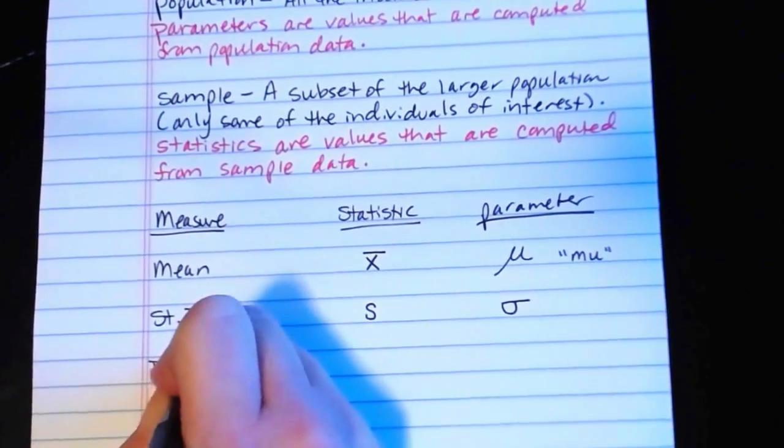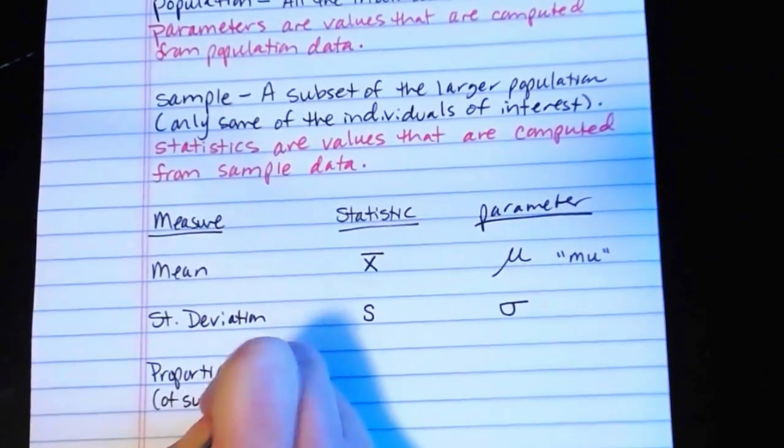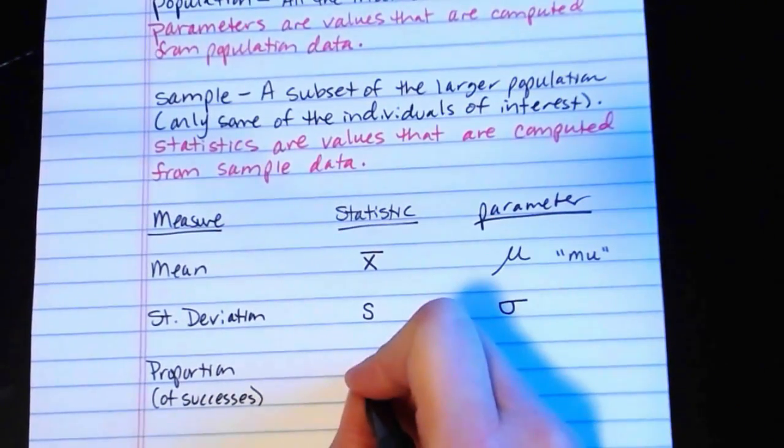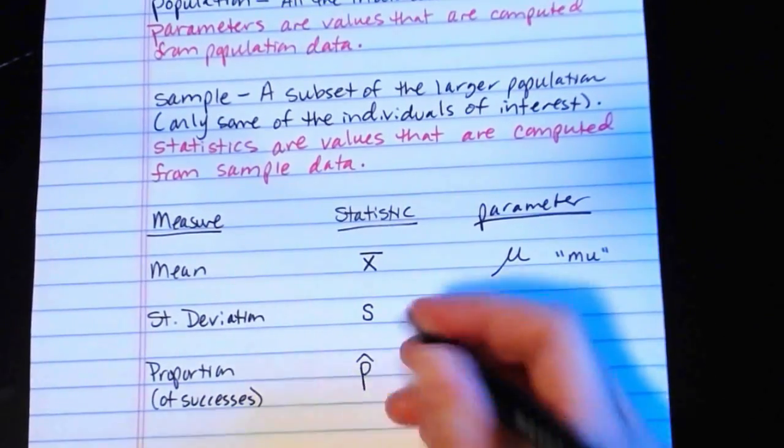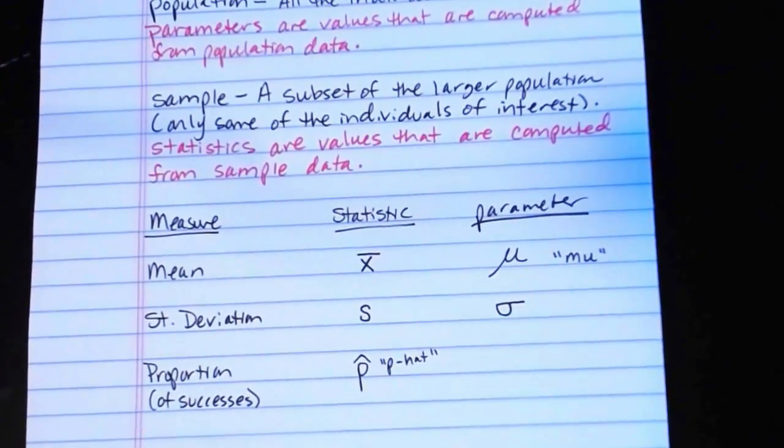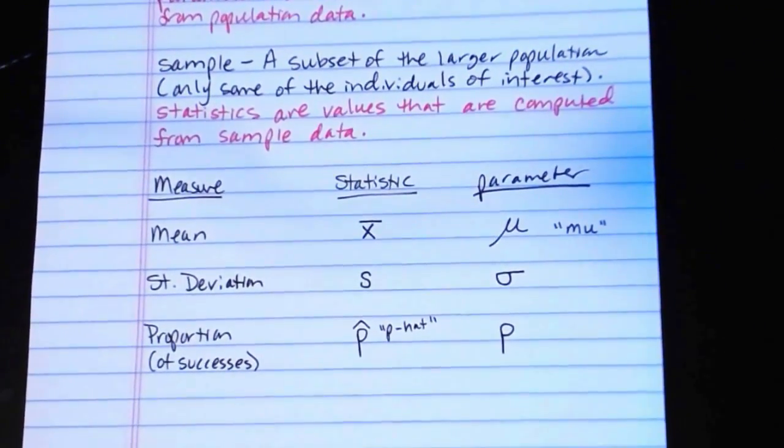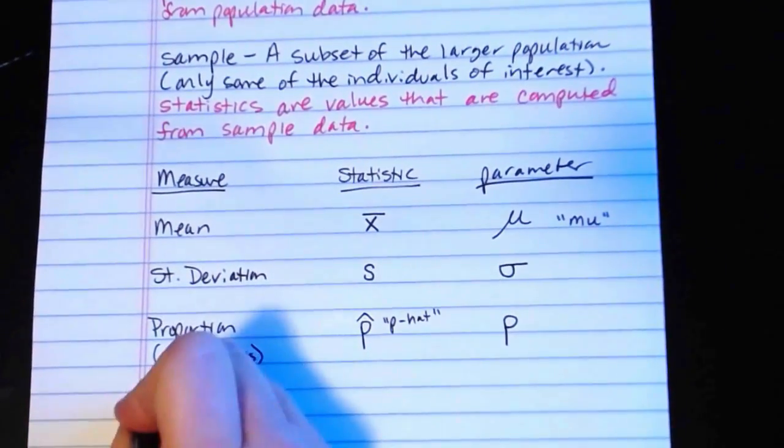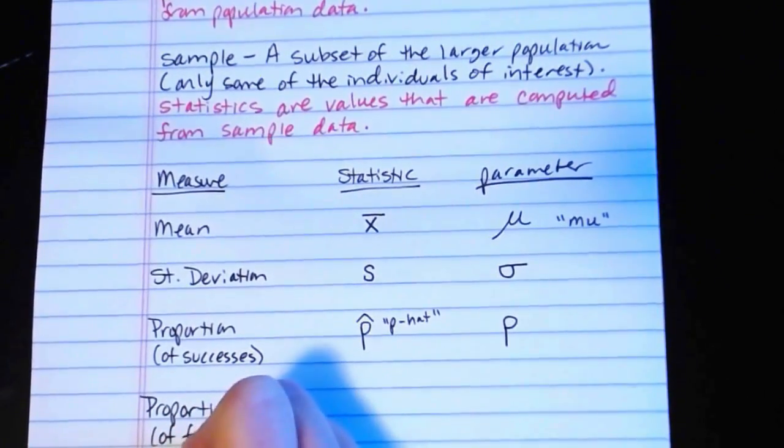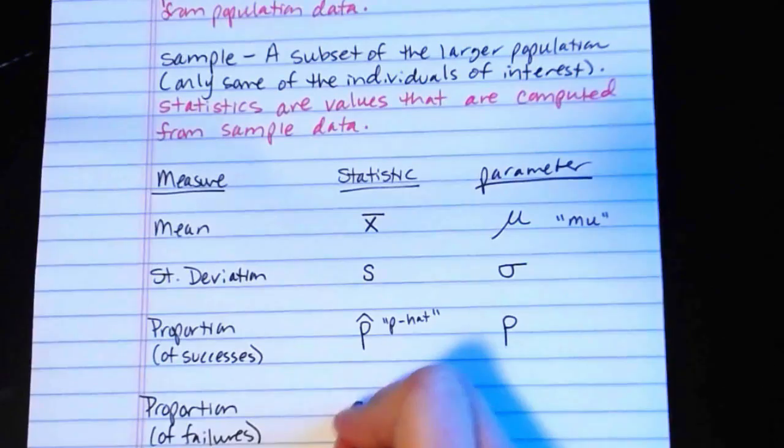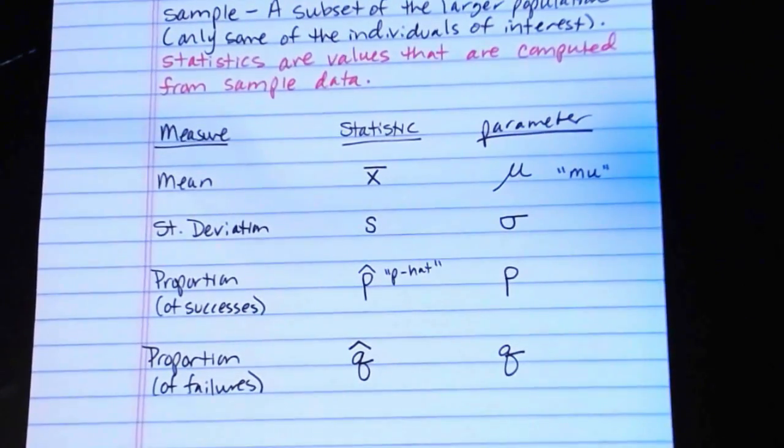If we want to talk about the proportion of successes in the sample, that's P hat. So it's the lowercase letter P with a little hat on it and you would actually pronounce that P hat. If we're talking about the proportion of successes in the population, it's just lowercase p. If we want to talk about proportion of failures in the sample, that's lowercase q with a hat on it. And in the larger population, it's just lowercase q with no hat.